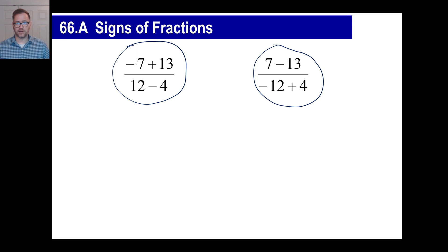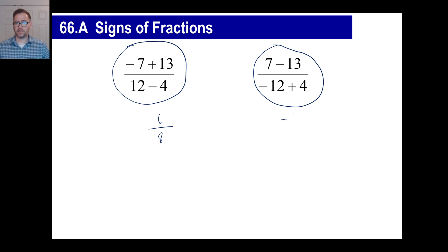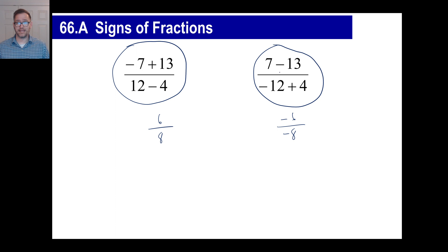Let's do the math and see what happens. Negative seven plus 13 is six, and 12 minus four is eight, so we get six-eighths. Over here, seven minus 13 is negative six, and negative 12 plus four is negative eight. A negative six divided by a negative eight is positive — so it's the same thing. You can change every single sign in a fraction and not change its value at all.